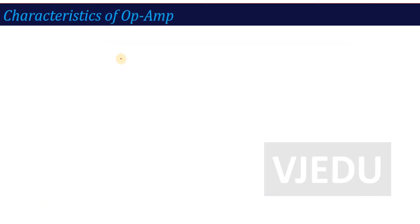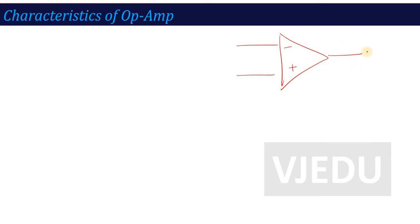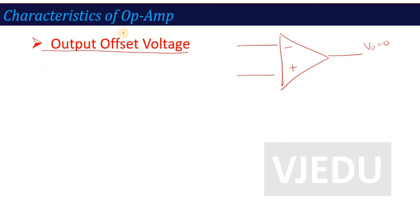First of all, if you remember, I told you at the start that if this is the symbol of an op-amp and you don't apply any input voltage, then our output voltage should be zero. But practically, there may be some output voltage. That characteristic is called output offset voltage — the voltage at the output terminal of the op-amp when there is no input voltage applied. If you get an output voltage without any input applied, then it is called output offset voltage.